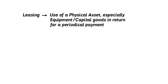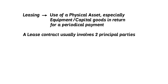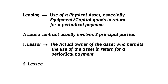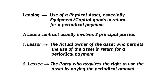Leasing refers to the use of a physical asset, especially equipment or capital goods, in return for a periodical payment. A lease contract usually involves two principal parties: the lessor and the lessee. The lessor is the actual owner of the asset, who permits the use of the asset in return for a periodical payment. The lessee is the party who acquires the right to use the asset by paying the periodical amount.